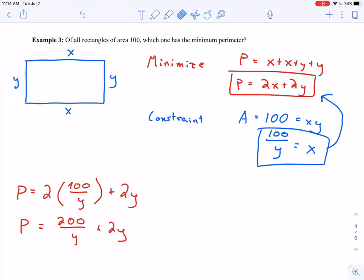We actually can't say that y is greater than or equal to 0. Because if y is 0, we'd have x is 100 divided by 0. That doesn't really make any sense.